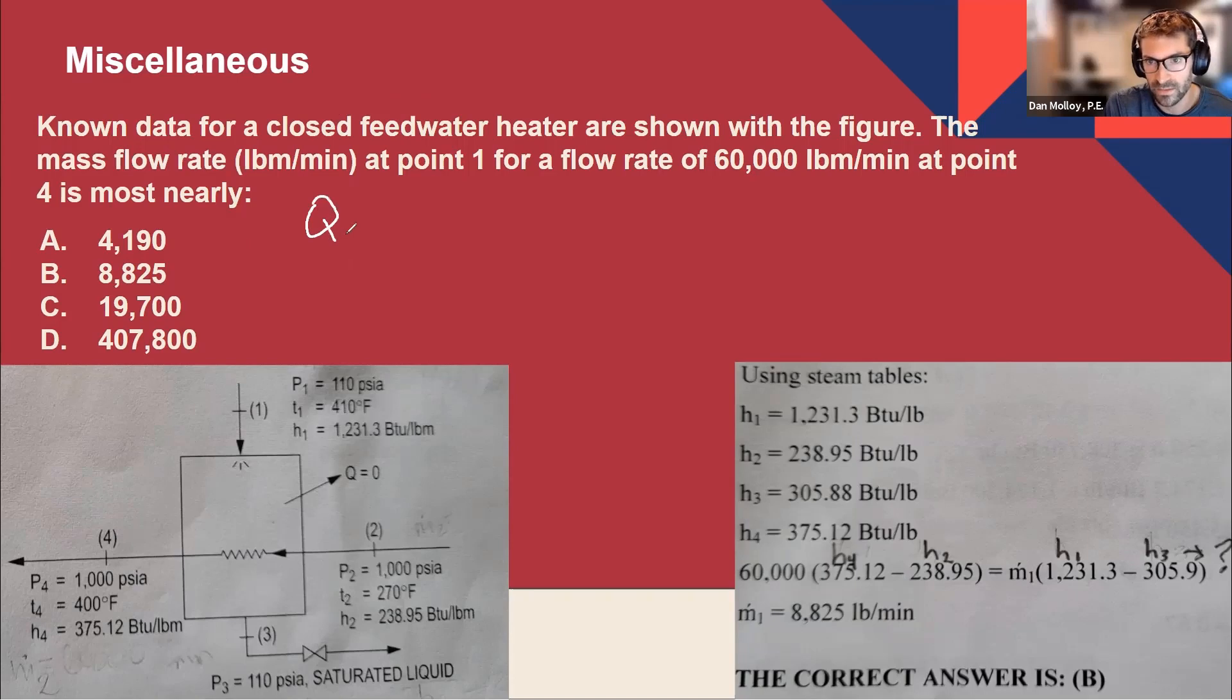Call it Q gained. Q is being gained from two to four. That's my expectation going in. And then Q is being given up. That's equal to the amount of heat being given up as we go from one to three because one is higher than three. It's cooling off, becoming saturated and being drained away.